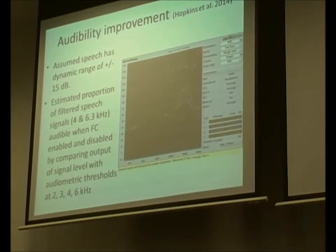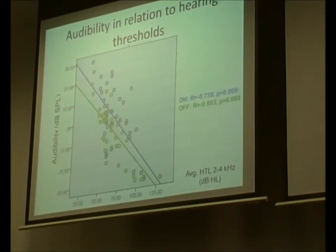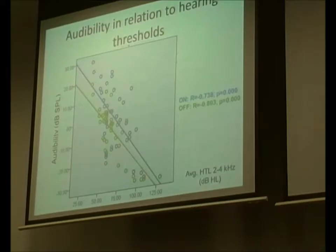I ended up with an audibility improvement value — the on value minus the off value. I also looked at the absolute value of audibility. As hearing threshold increases, audibility decreases, as expected. The gap between on and off conditions is fairly consistent throughout, which is what I expected since my fitting procedure aimed to improve audibility with frequency compression regardless of hearing threshold. The gap does narrow slightly at higher hearing losses, but generally it's similar across the range.